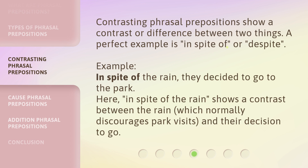Contrasting phrasal prepositions show a contrast or difference between two things. A perfect example is 'in spite of' or 'despite.' Example: 'In spite of the rain, they decided to go to the park.' Here, 'in spite of the rain' shows a contrast between the rain, which normally discourages park visits, and their decision to go.